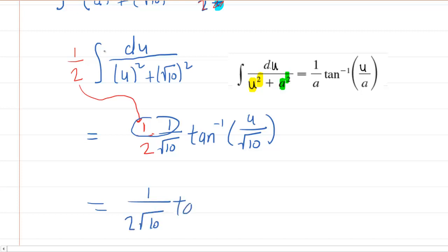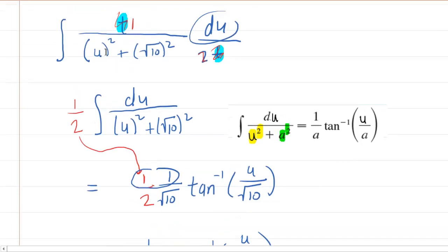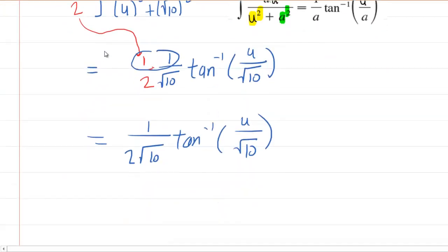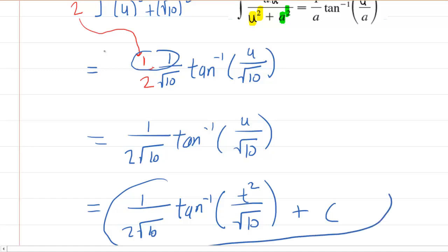Then we have the answer in terms of u. We don't want the answer in terms of u. We have to go back and replace u with the original substitution that we had made. Remember u was equal to t squared. So all you really have to do at the end here is just replace your u with the t squared, and then also include your constant of integration. So you'll have t squared over square root of 10 plus your constant of integration, and this will give you the answer to the question.